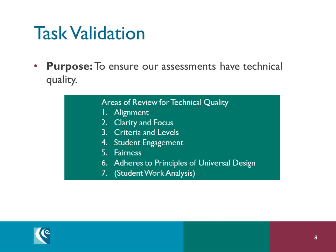This list shows areas we cover in the review process. In today's video we will discuss the first six areas of technical quality including alignment, clarity and focus, criteria and levels, student engagement, fairness, and adherence to principles of universal design. We will discuss the student work analysis after students complete the assessments that we validate — this will come later in the process.